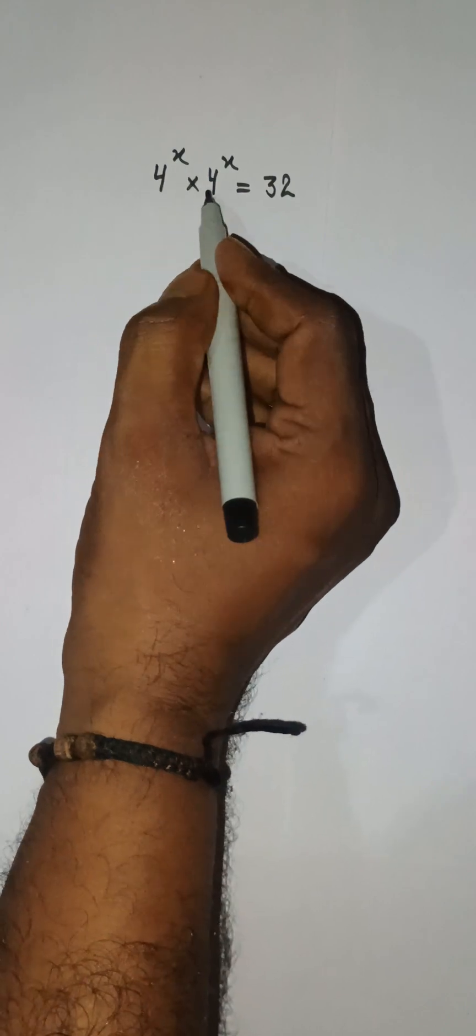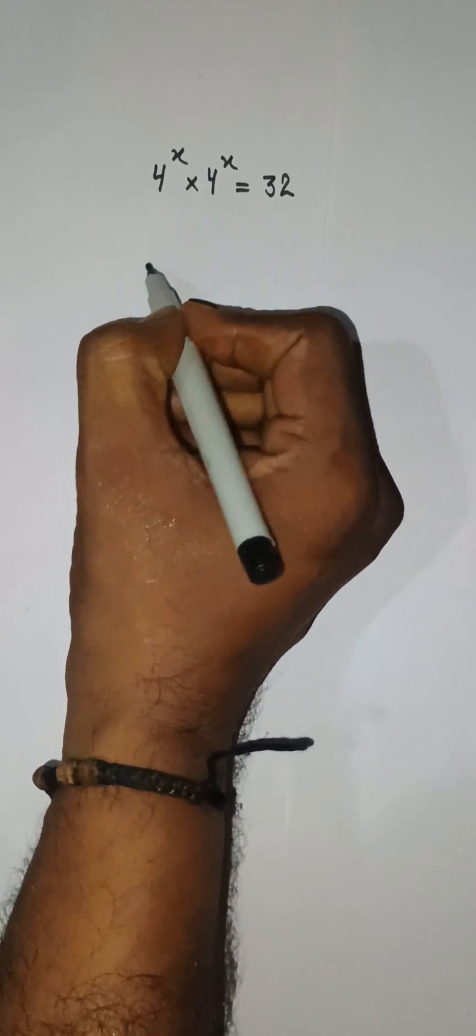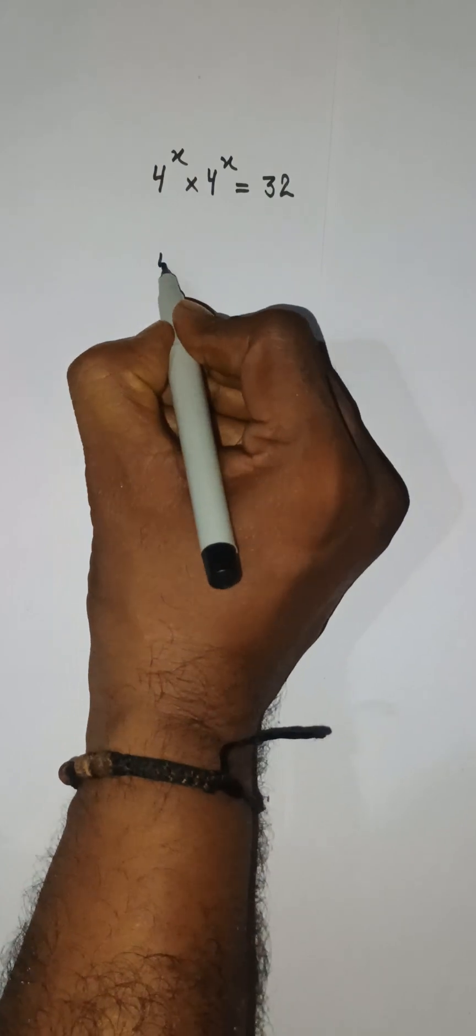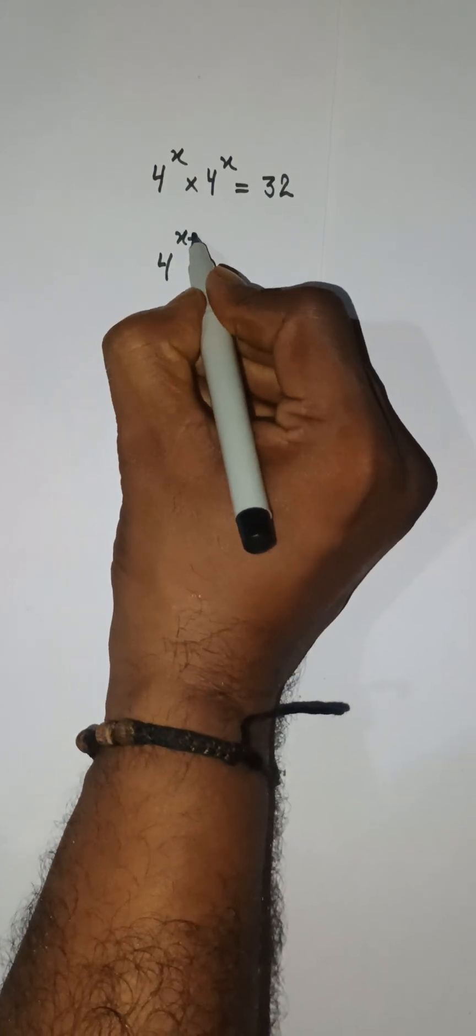Here 4 to the power x multiplied by 4 to the power x. Bases are same so we can add their exponents together. Here we have 4 and then we can write x plus x.